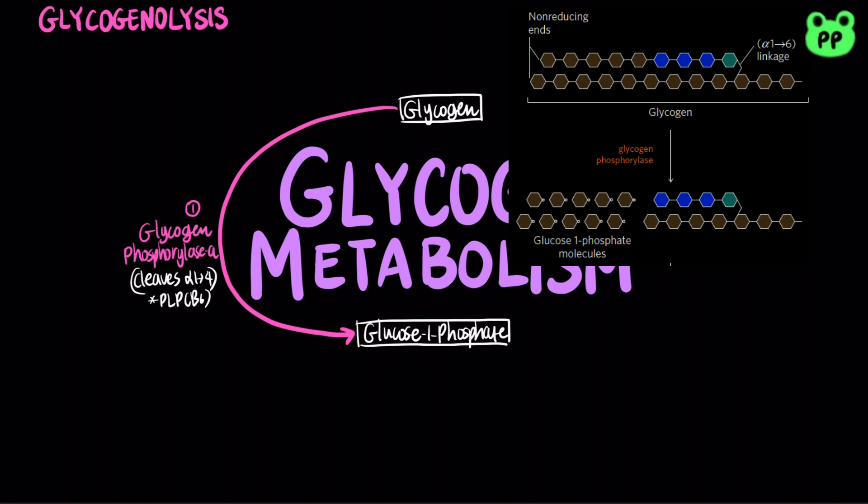Glycogen phosphorylase acts repetitively on the non-reducing ends of glycogen branches until it reaches a point four glucose residues away from an alpha-1,2,6 branch point.